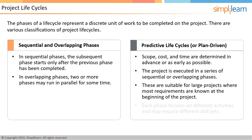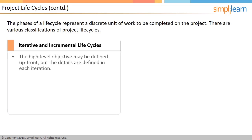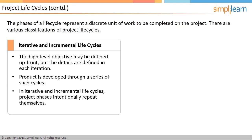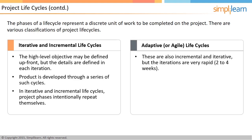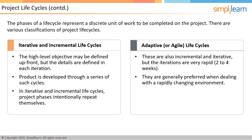Another feature of predictive life cycles is that each phase may require people with different skill sets. For example, traditional software development has phases like requirements, feasibility, planning, design, construction, testing, and transition. Incremental and iterative life cycles have a short upfront high-level definition and planning phase, and the product is developed through a series of iterations, where each iteration increments or adds to the functionality by a little. Adaptive or agile life cycles are variants of incremental and iterative life cycles where iterations are very short — typically two to four weeks. Agile methodologies are becoming very popular in software development and other industries where requirements are highly changeable and frequent feedback is beneficial.